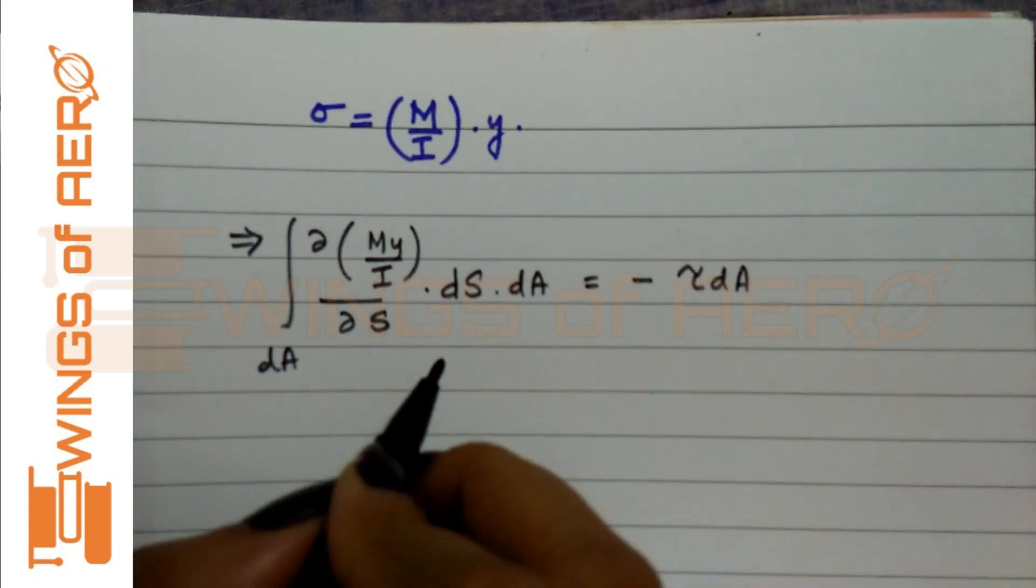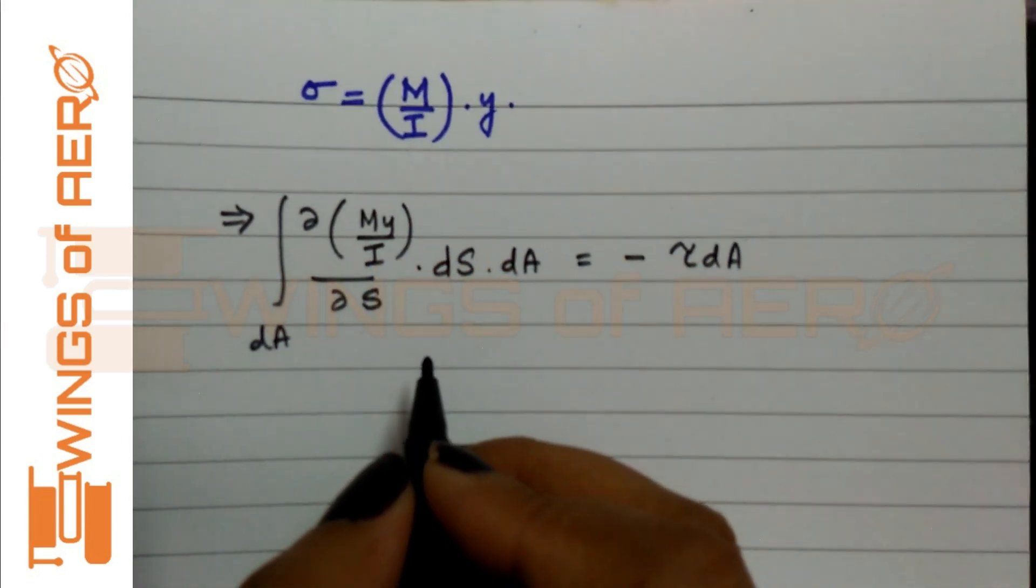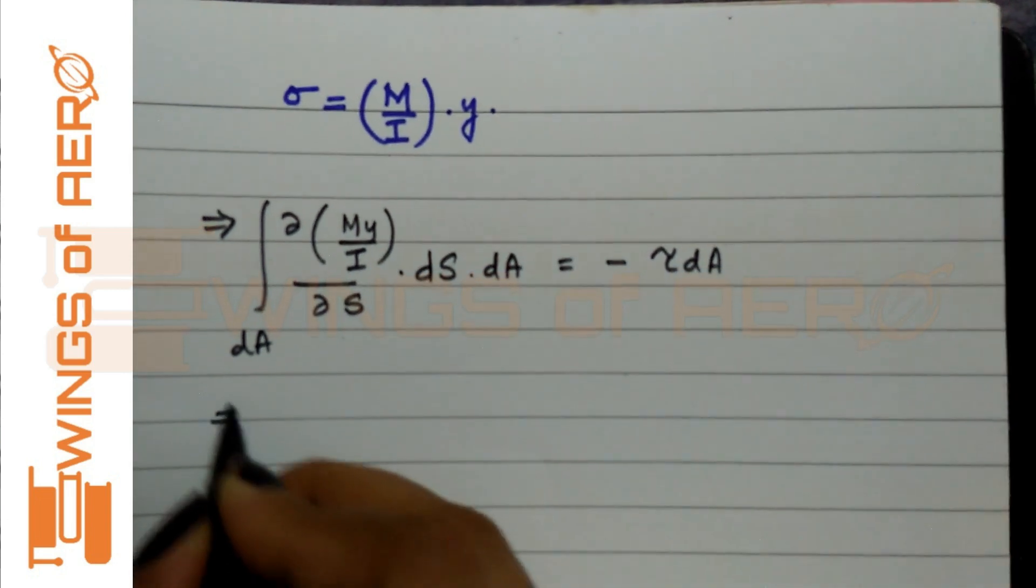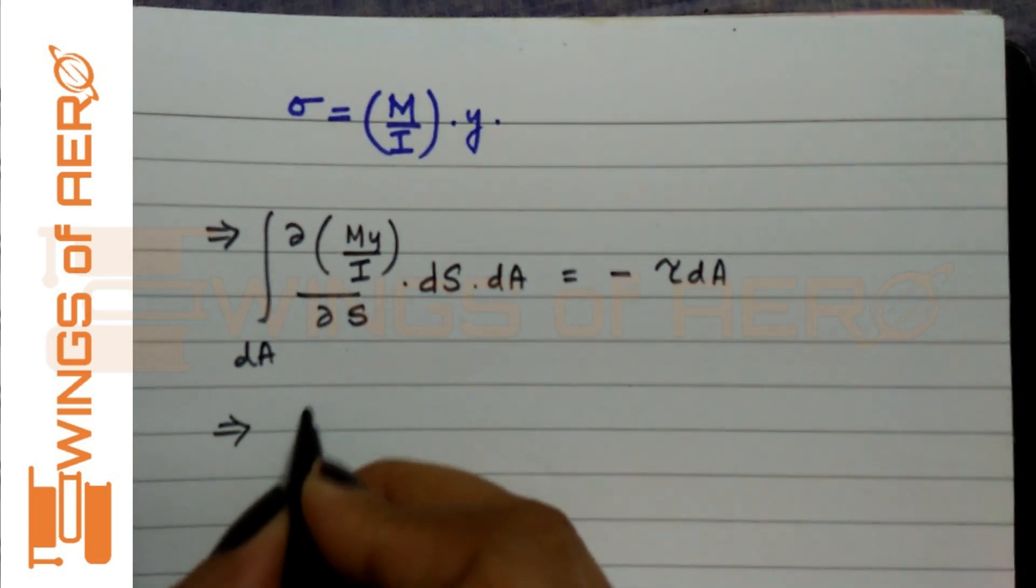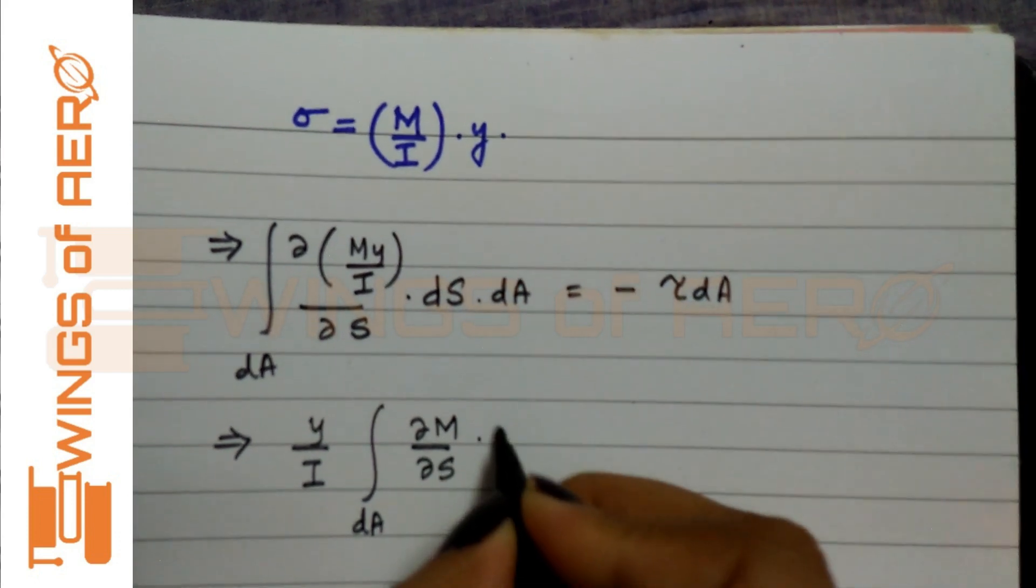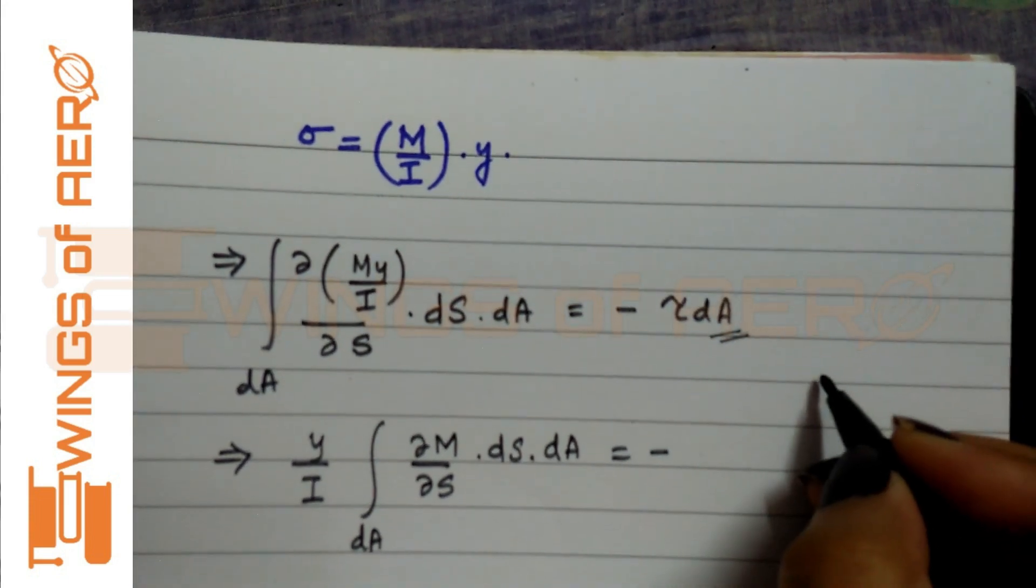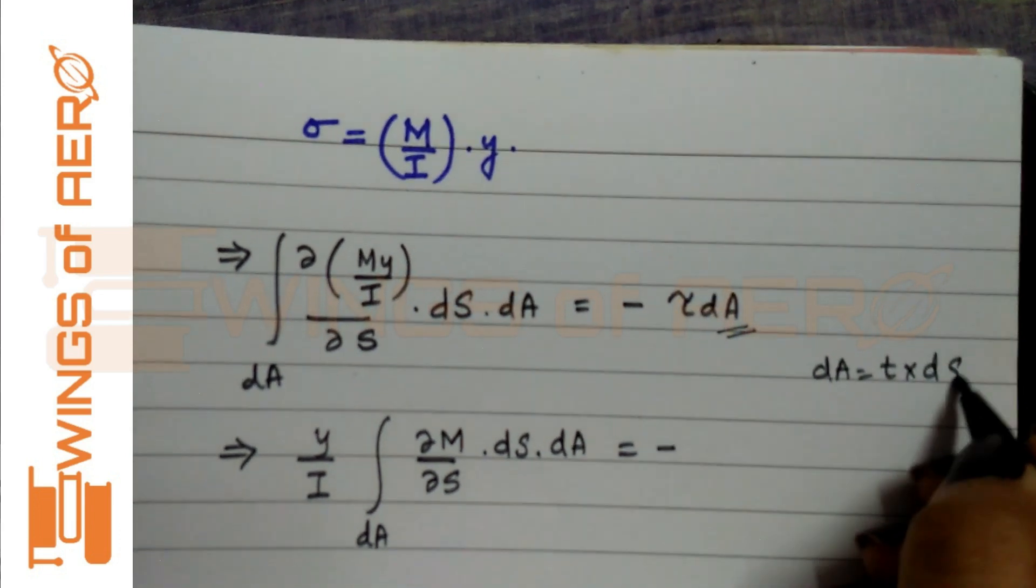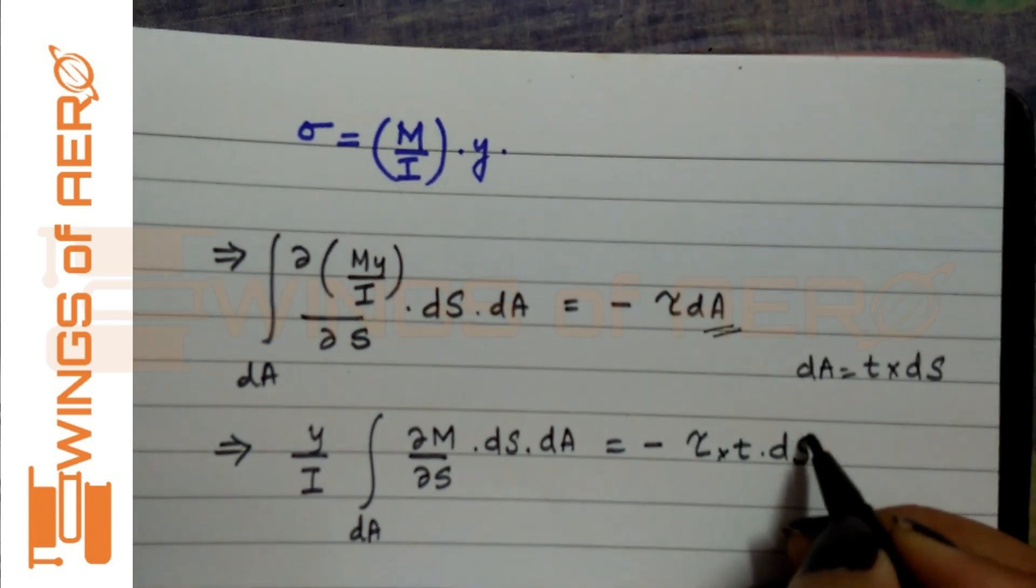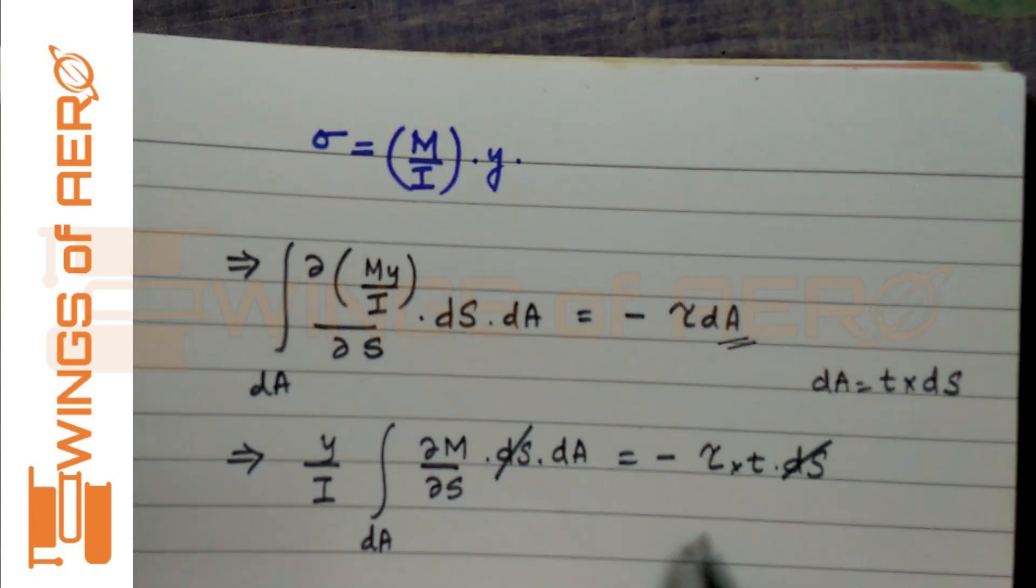So what is our Equation 1? d of M Y by I by dS into dS dA integral dA equals minus tau dA. Now here, what is Y? Y is a point, a displacement from the centroid. And I is the moment of inertia, which is constant across the cross section. So what is the variable? M is the variable. So we can keep the other terms outside. And we integrate dM by dS into dS to dA. Now can I split dA? dA equals t into dS. So we can write t into dS. Can I cancel dS and dS? Yes, because this is also constant.